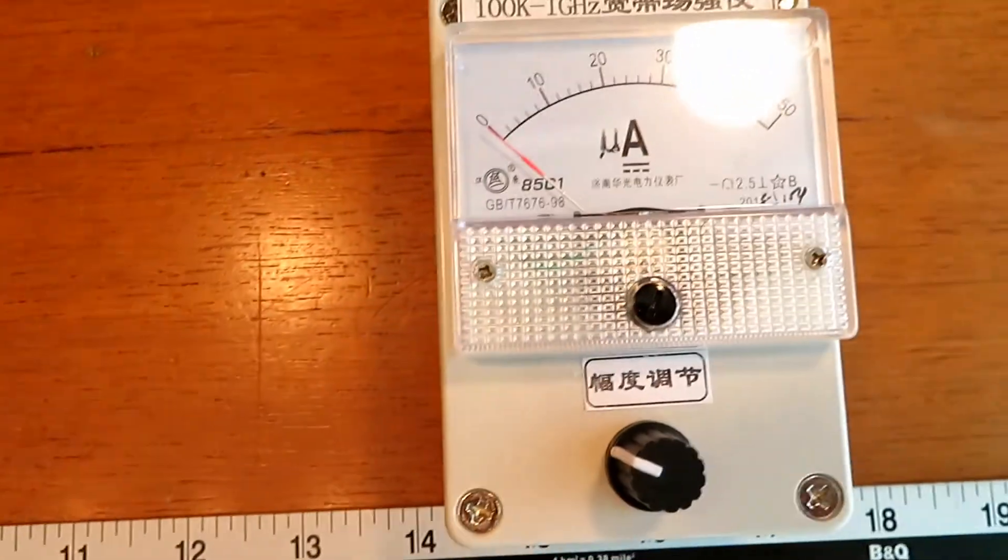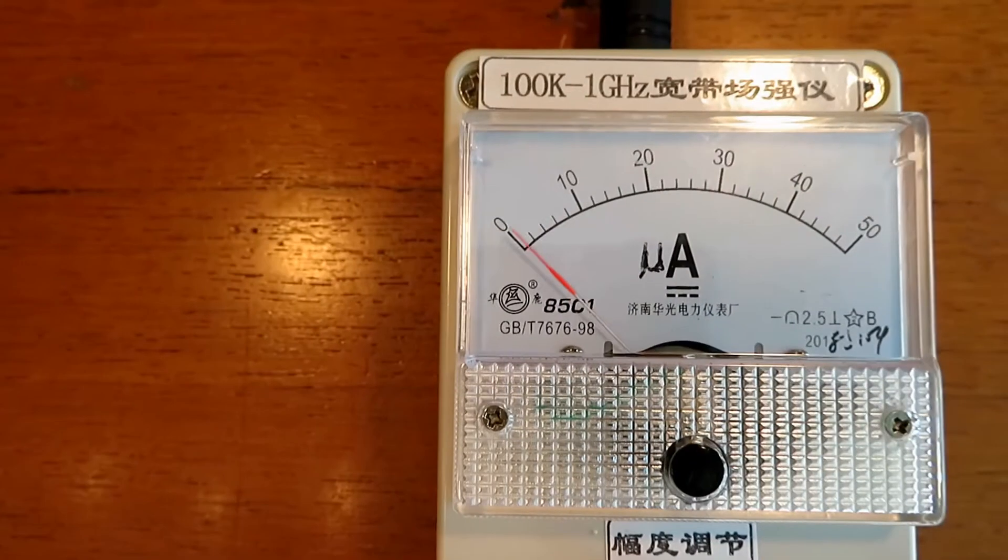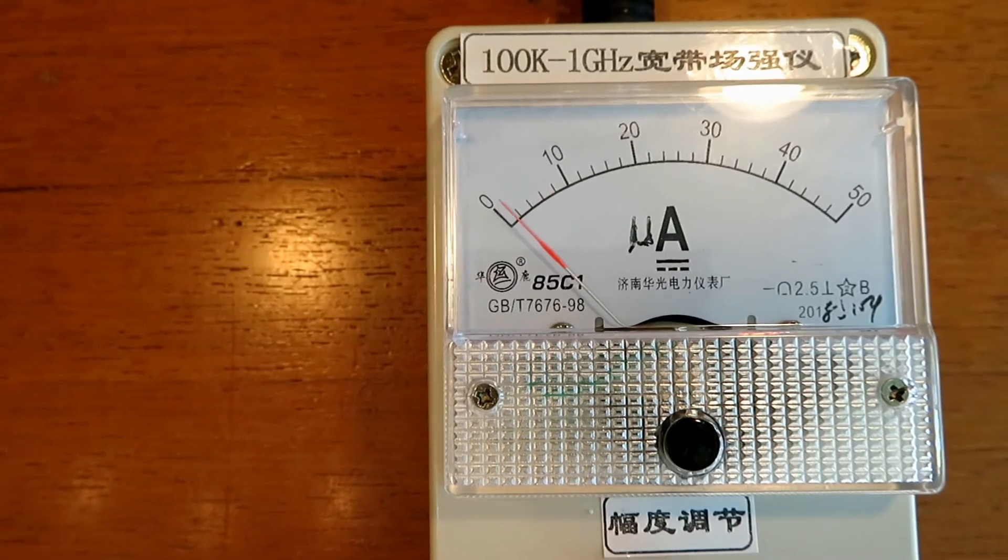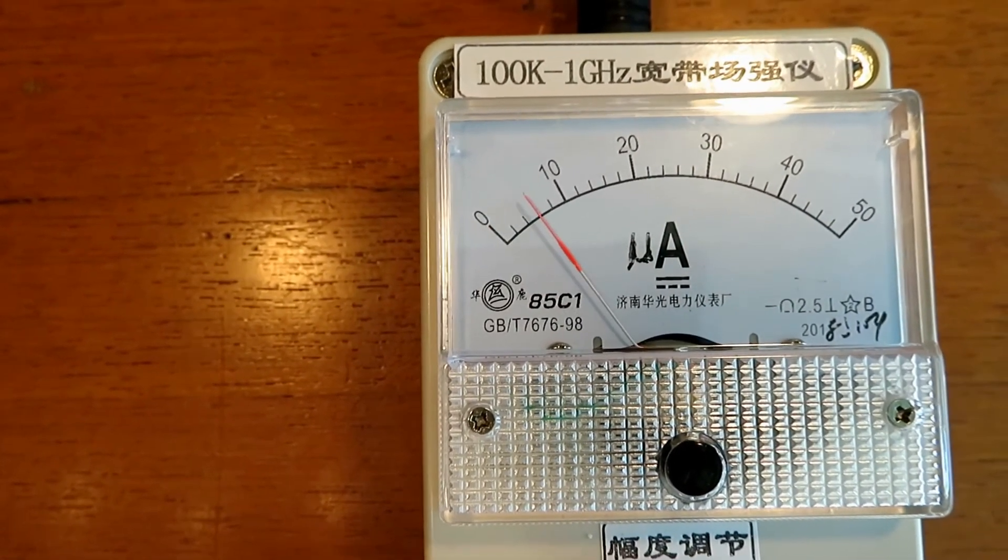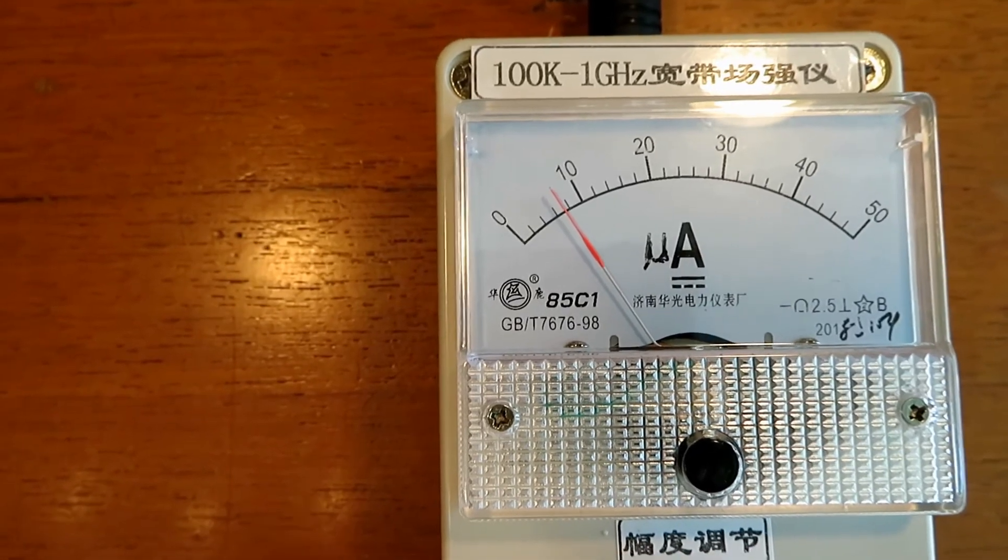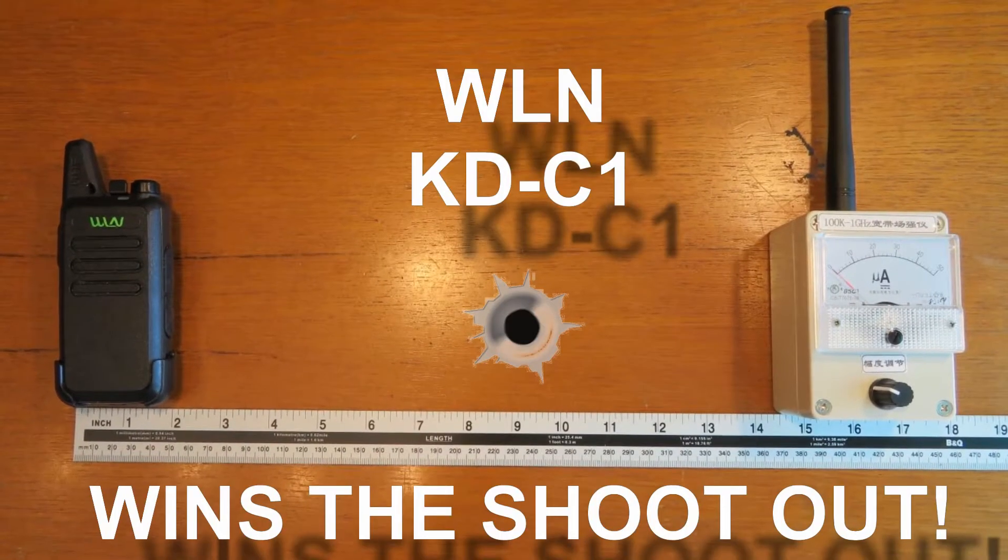So we can say the T1 really is the loser in this test, and the measly... well, you can see. And the winner? Well, the winner is very clear and one of my favorite radios to boot: the WLN KDC1.